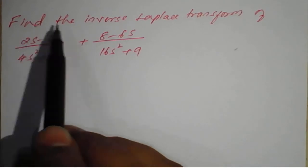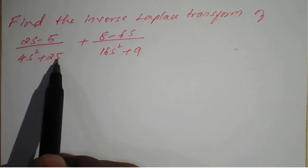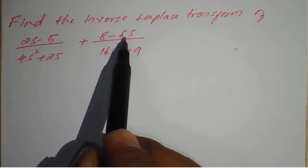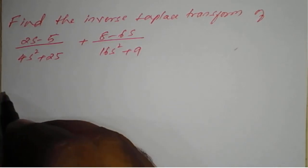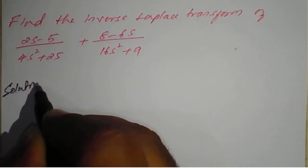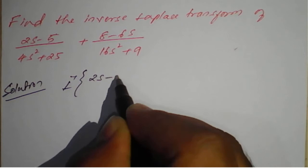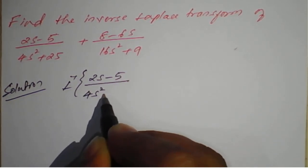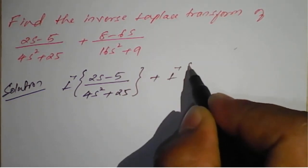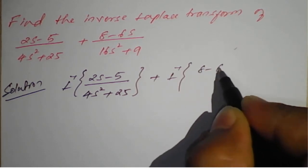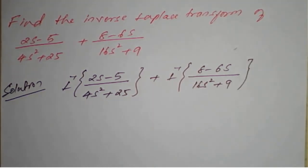Problem 1: find the inverse Laplace transform of (2s minus 5) divided by (4s² plus 25), plus (8 minus 6s) divided by (16s² plus 9). We only need to rearrange and apply standard formulas here. So, the solution: inverse Laplace transform of (2s minus 5)/(4s² plus 25) plus inverse Laplace transform of (8 minus 6s)/(16s² plus 9).